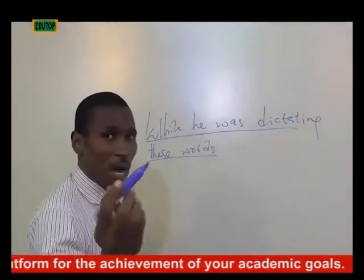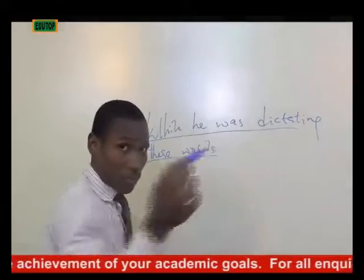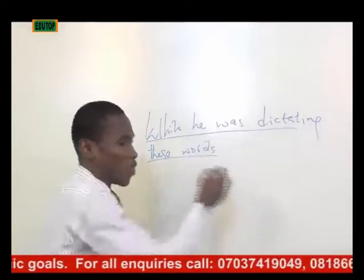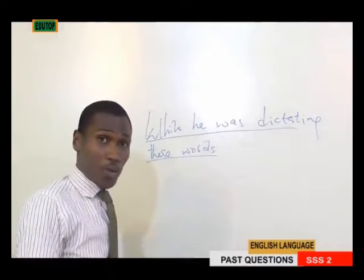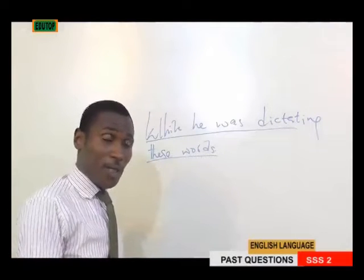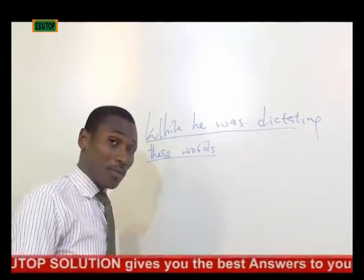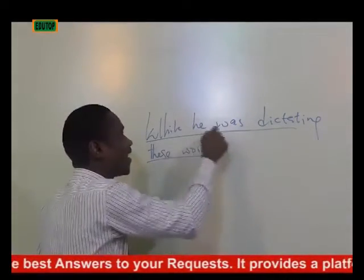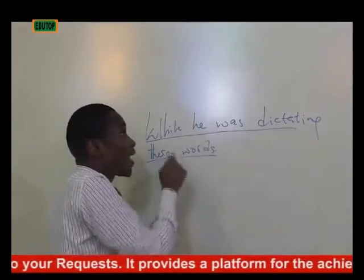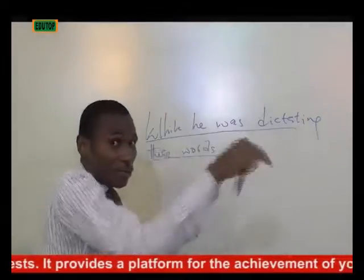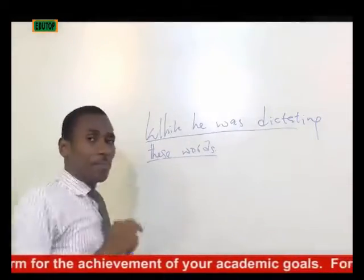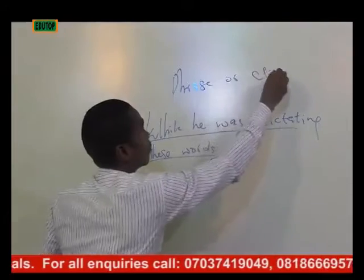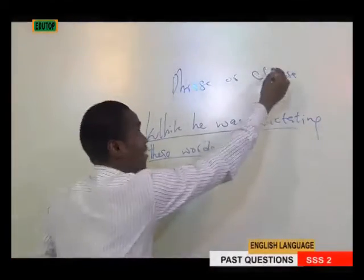Remember your parts of speech: adverb, verb, adjective, conjunction, interjection, noun, pronoun — eight of them. Under which of these would you classify 'while he was dictating these words'? This expression refers to the time of an action, which is an adverb function. The next question is: is this expression a phrase or a clause? The answer is a clause — because of the presence of a finite verb. And since it is telling us about time, it is an adverbial clause of time.